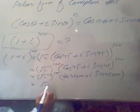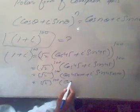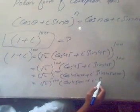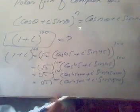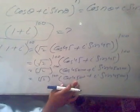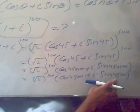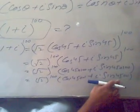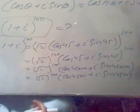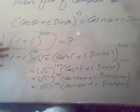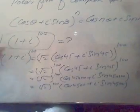And this would be again under root 2 power 100, cos 4500 plus iota sine 4500. Now cos 4500, that value can easily be calculated using calculator. And sine 4500 can also be calculated using calculator. And when you calculate the value using calculator then you will have the answer of 1 plus iota power 100. I am sorry I don't have calculator right now, so you will have to do it yourself. So now you have seen that we use the polar form to solve the very high powers of complex numbers.